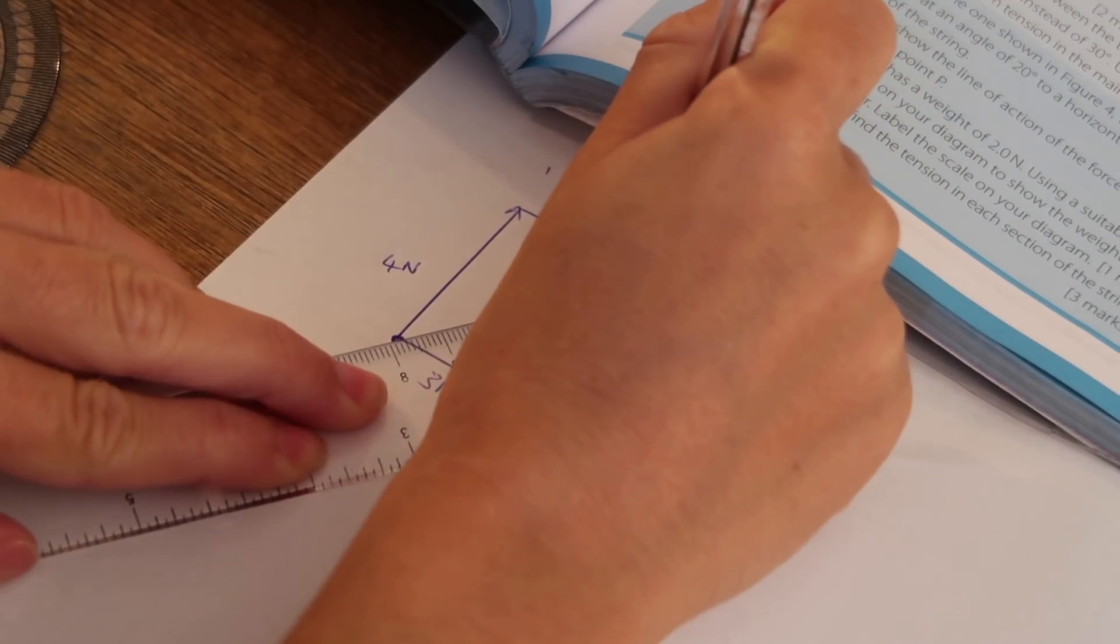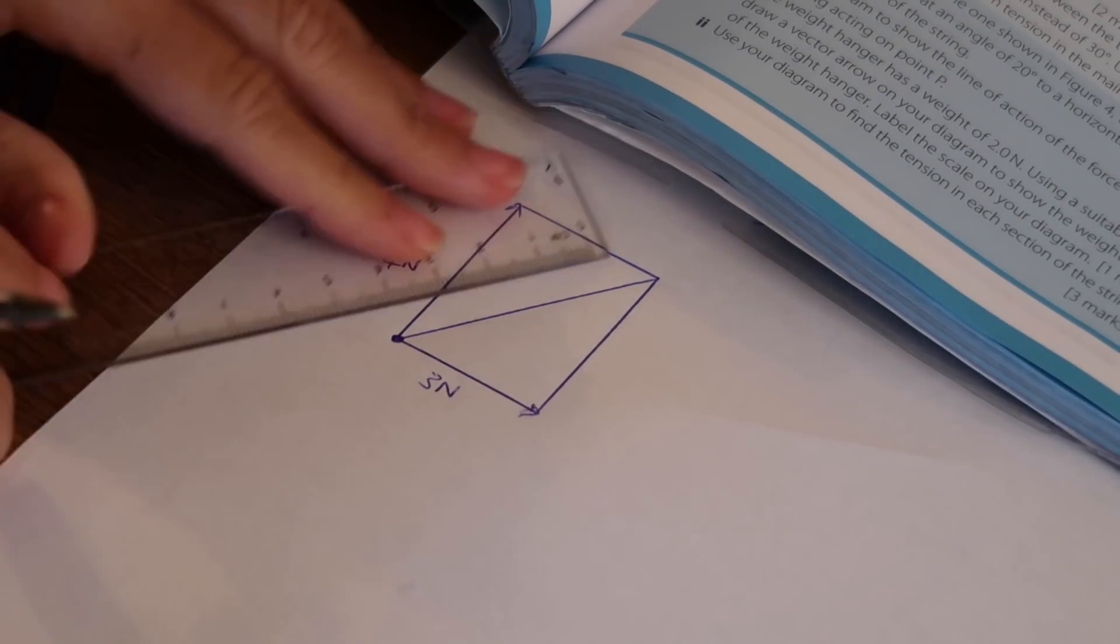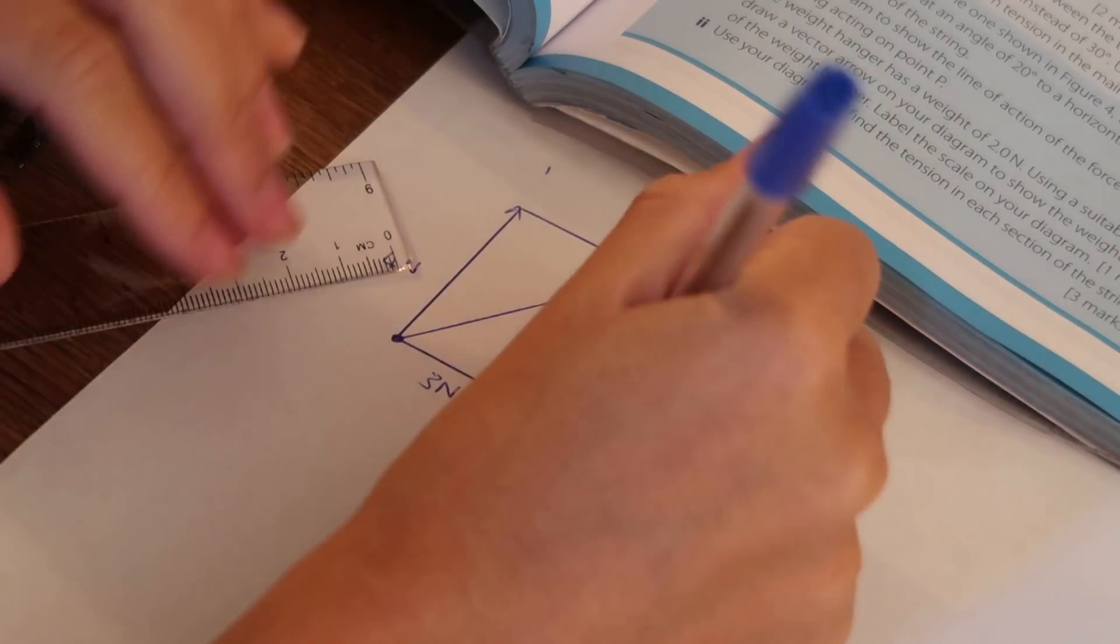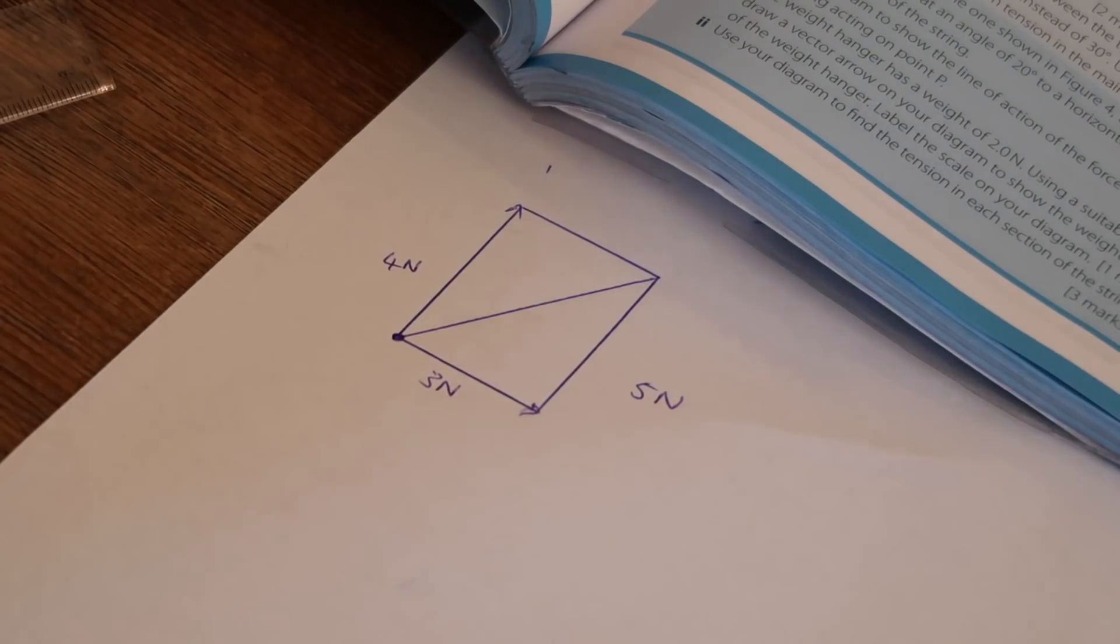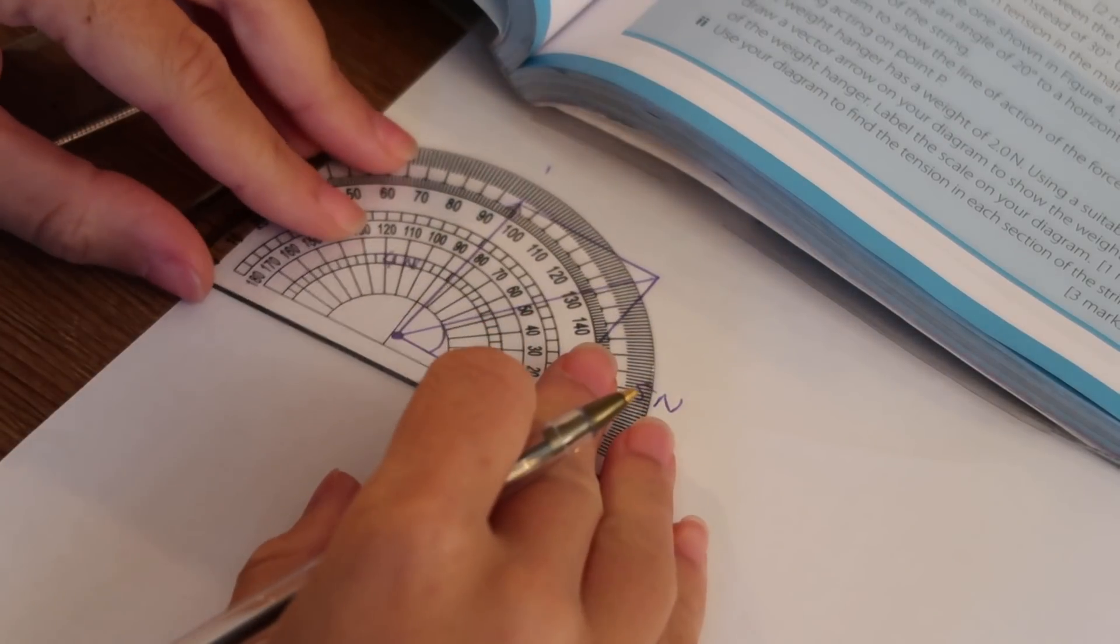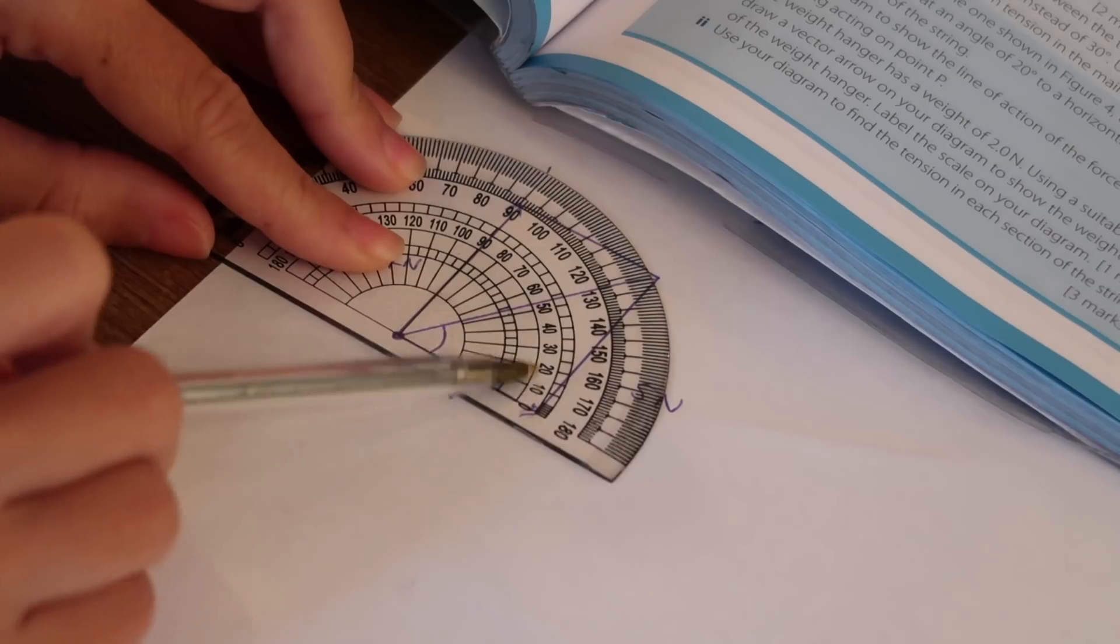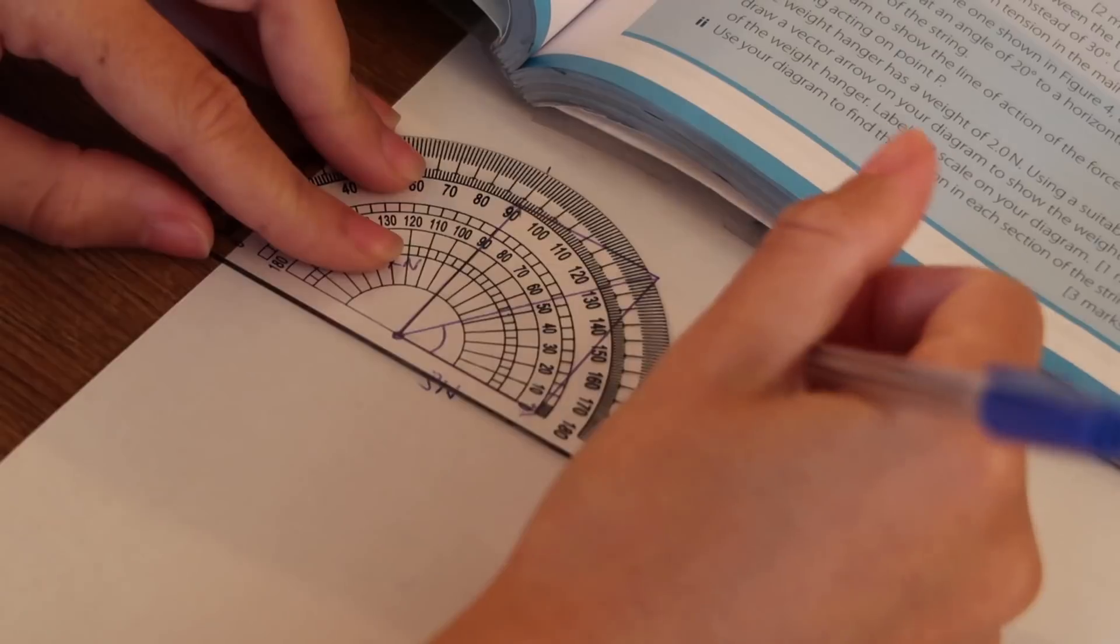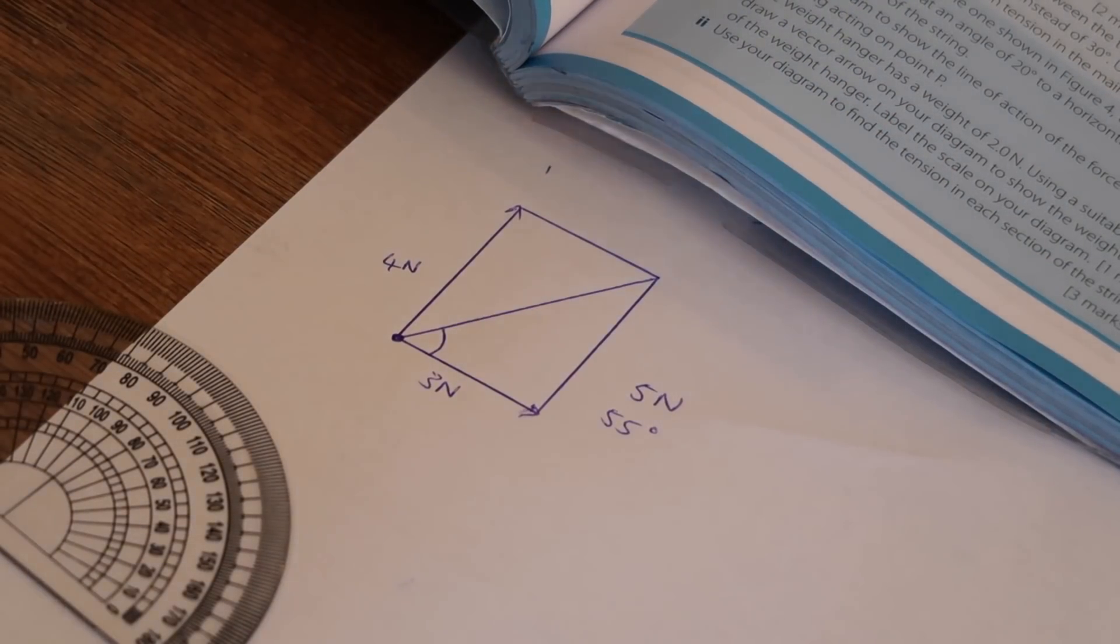In terms of working out the magnitude just measure the length of that line. Yep and that's 5. So your resultant force is 5 newtons. Then in terms of working out the direction you're just going to measure this angle here. Make sure you're reading the right way. So obviously you're reading in this case this way. I think I've done it slightly wrongly so I'm going to put that as 55 degrees. That's how I've worked out both the magnitude and direction.